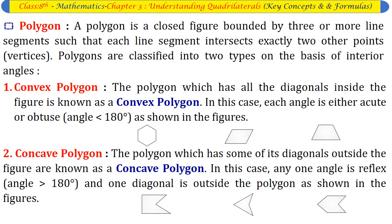A polygon is a closed figure bounded by three or more line segments such that each line segment intersects exactly two other points. Polygons are classified into two types on the basis of interior angles. Convex polygon: A polygon which has all its diagonals inside the figure — each angle is either acute or obtuse. Concave polygon: A polygon which has some of its diagonals outside the figure — one angle is reflex and one diagonal lies outside the polygon.